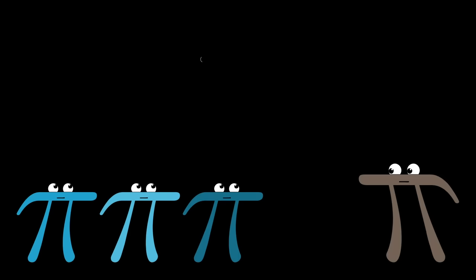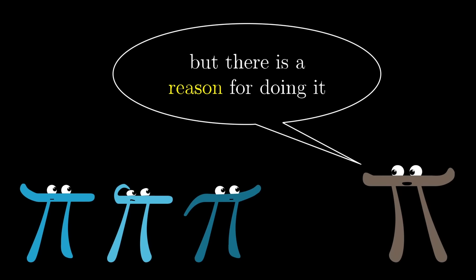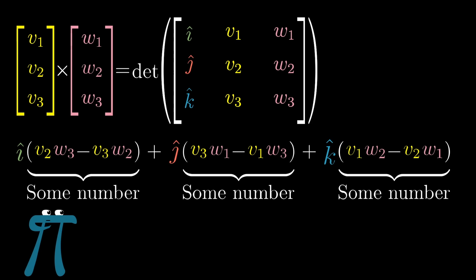And sure, in some sense this is just a notational trick, but there is a reason for doing it. It's not just a coincidence that the determinant is once again important, and putting the basis vectors in those slots is not just a random thing to do.